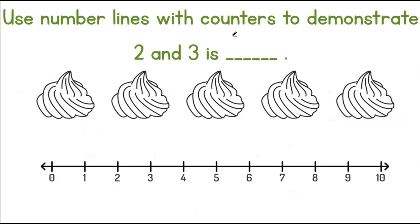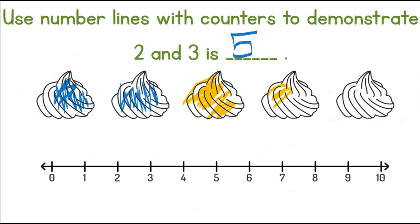Use the number lines with counters to demonstrate 2 and 3 is equal to 5. We are going to colour these the same way we did with the cans. So we have 2 blue and then 3 yellow, which will give us 5. Let's figure this out using the number line.